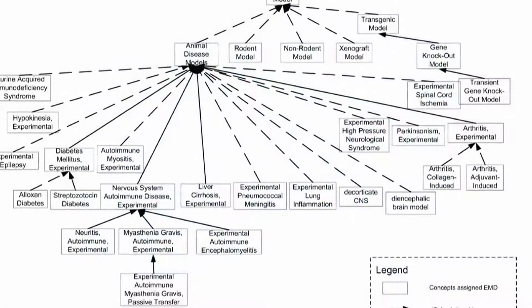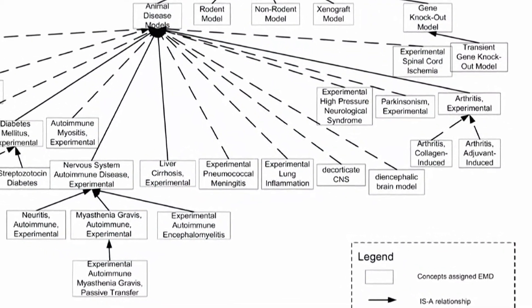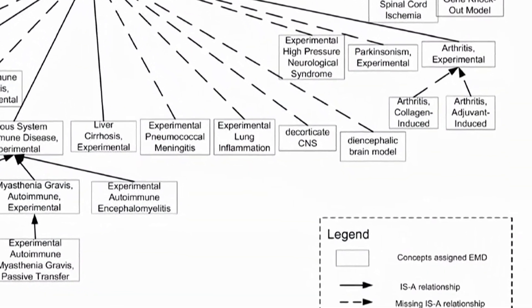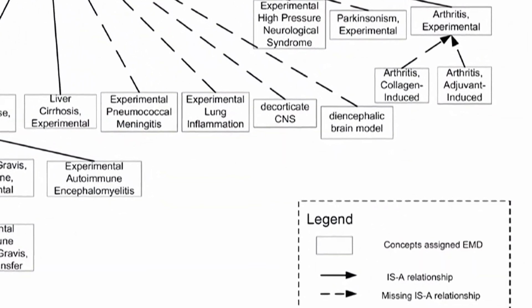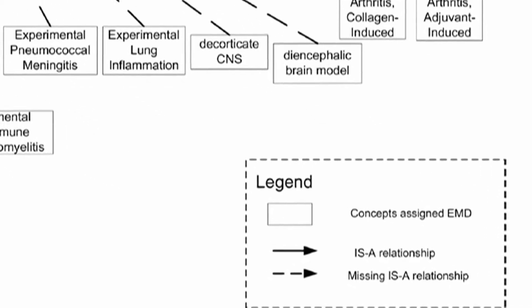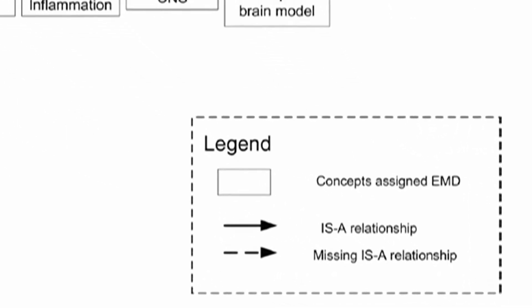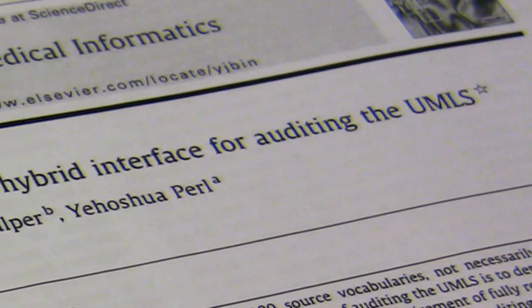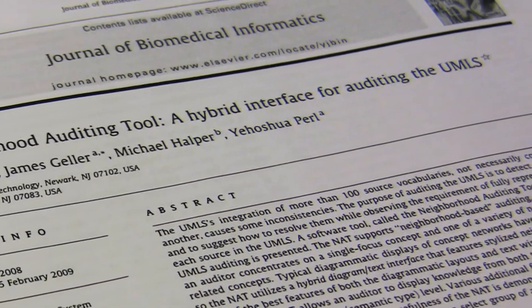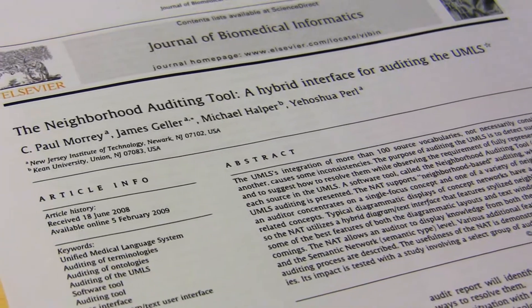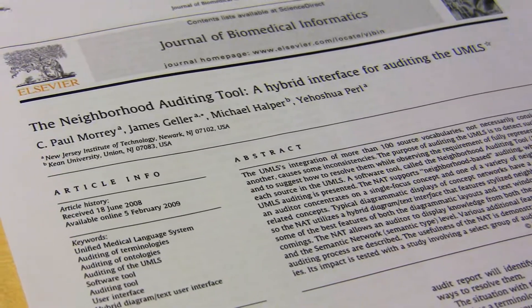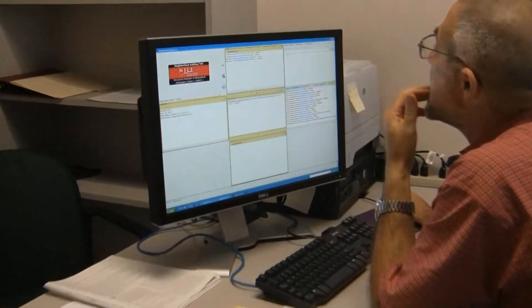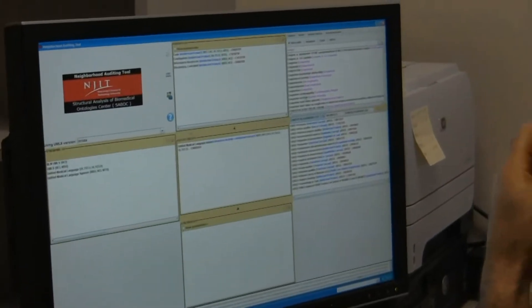However, as can be expected in a human-directed integration of this size, the UMLS contains a number of errors. Our group has been looking for techniques to locate these errors — we call this auditing the UMLS. This brings us back to the Neighborhood Auditing Tool. The primary purpose of the NAT is to simplify browsing the UMLS, thus facilitating auditors in finding and correcting such errors.